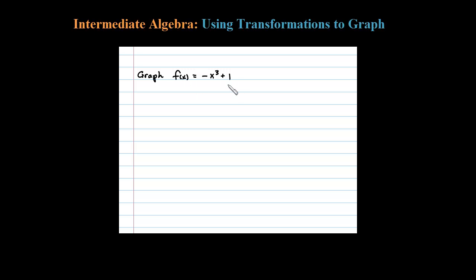To graph this cubic function, we're going to first identify the basic graph and then the translations. So the basic graph here is x³. The next thing I notice is that I have a reflection.